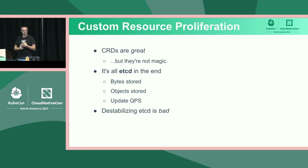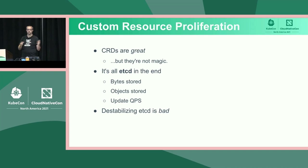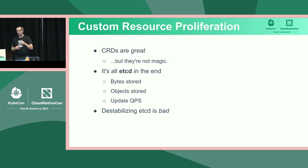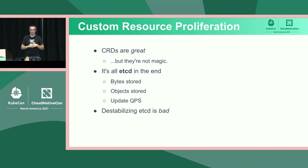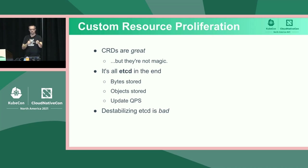One way you can mess up etcd is to write too many bytes — it's not infinite storage, you'll eventually hit some limit and etcd will start to fall over. If you create too many tiny objects, regardless of total byte count, etcd will start to fall over. And if you're constantly writing requests through the API server, etcd won't like it and will fall over. Destabilizing etcd is really, really bad. The cluster starts to act funny, requests time out, pagers go off, you get angry calls from SREs. And the worst thing is you can't debug it because you're using the destabilized system to debug it.